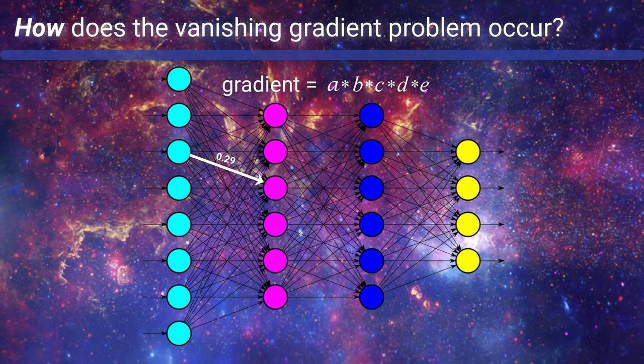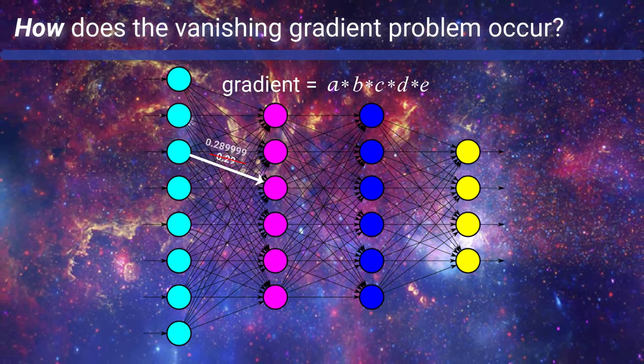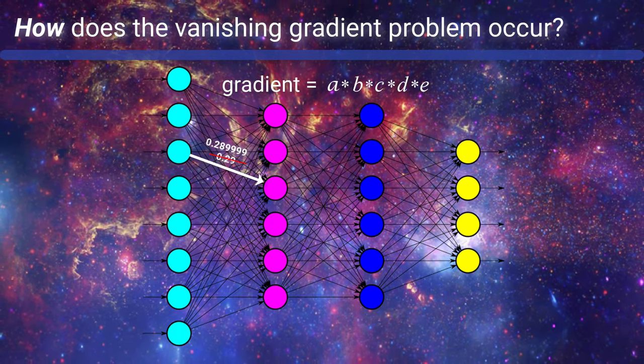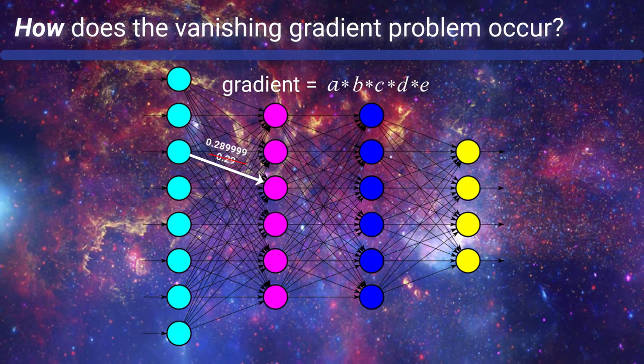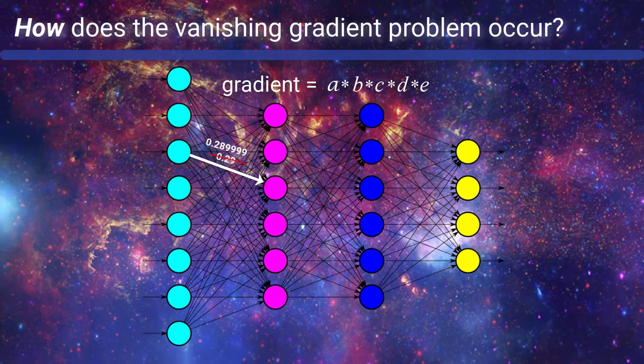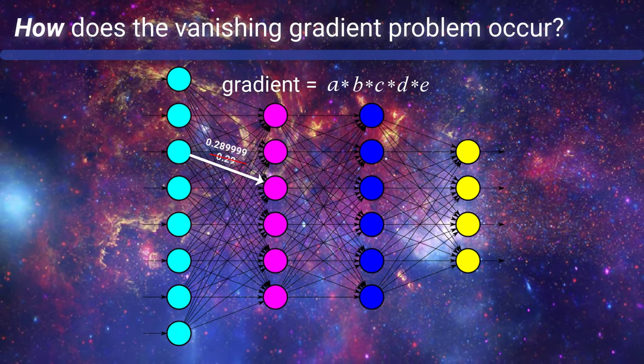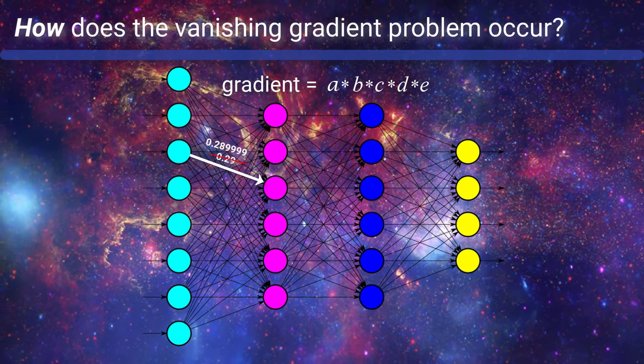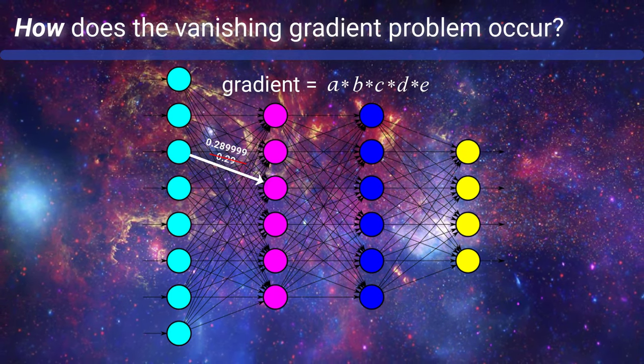Then we subtract this number from the weight, and the final result of this difference is going to be the value of the updated weight. Now you can think about if the gradient that we obtained with respect to this weight was already really small, i.e. vanishing, then by the time we multiply it by the learning rate, the product is going to be even smaller. And so when we subtract this teeny tiny number from the weight, it's just barely going to move the weight at all.